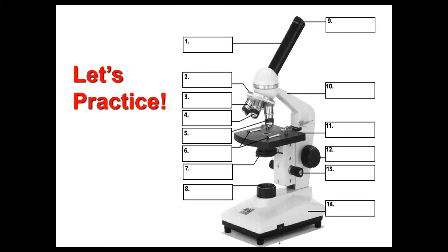Let's do a quick practice of the different parts, as you may have to identify them on a quiz. Number one is the body tube. Number two is the revolving nosepiece. Number three is the low power objective lens — it typically has a magnification of 4x, though remember that is different from the total magnification. Number four is the medium power objective, and number five is the high power objective. Medium power objective typically has a magnification of 10x, and high power is 40x.